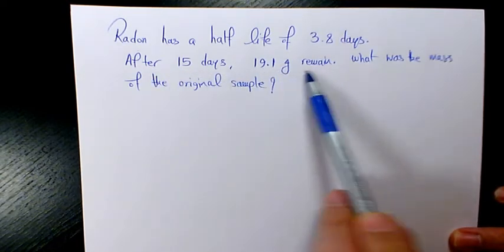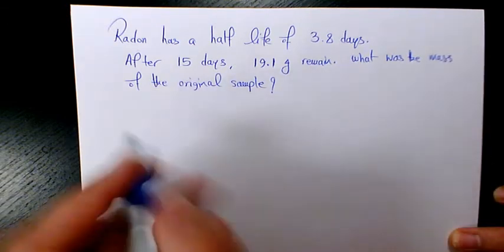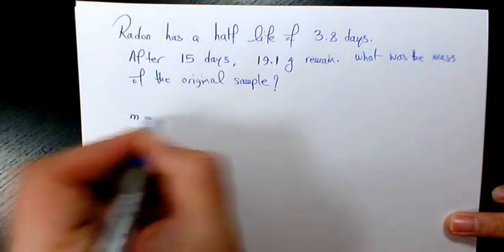I'm gonna say m equals m₀ times 0.5 to the power of t over θ.